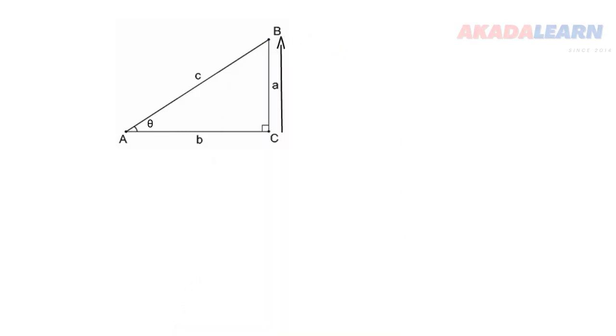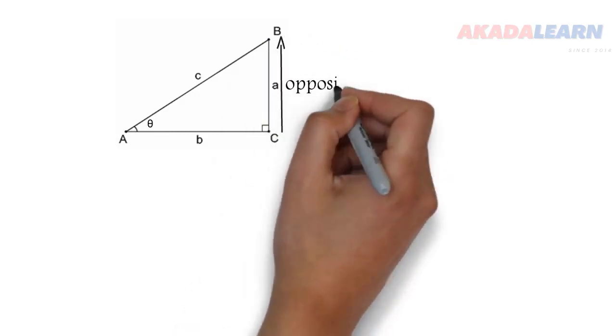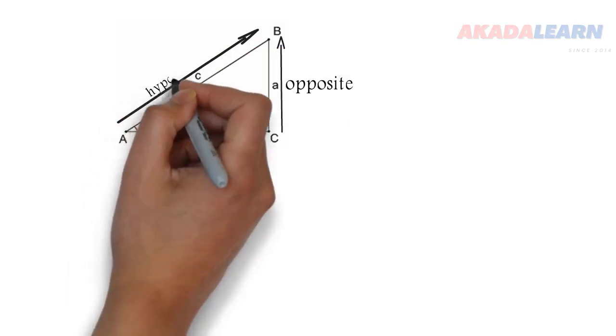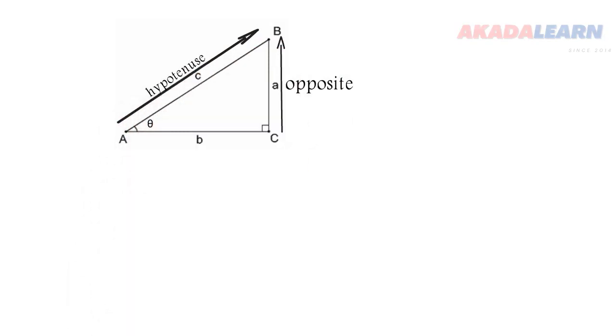So any side facing the angle is called the opposite, which is side A. Now the longer side of the triangle is called the hypotenuse, which is our side C. Now the third remaining side is called the adjacent.